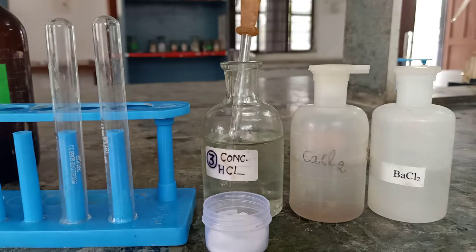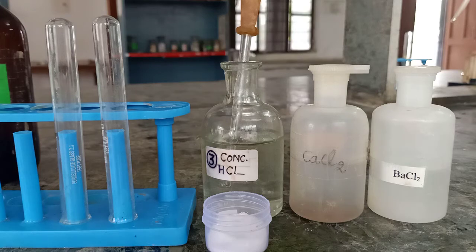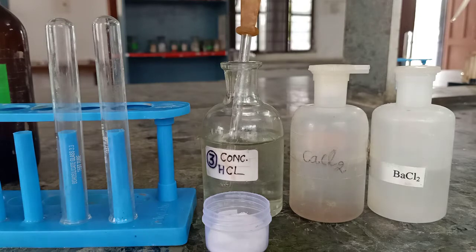Now once you confirm that there is no anion from dilute group, there is no anion like chloride, bromide, iodide or nitrate from concentrated group, then you will move to special group. In special group, first of all we have to check the presence of sulfate anion.